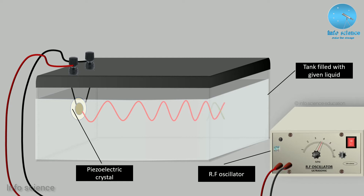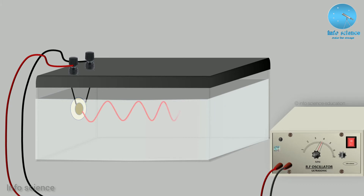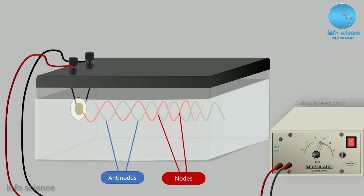In the animation, the first wave — the transmitted wave — goes in and reflects. We will form a standing wave. The red color represents the wave produced by the piece of crystal, the green color represents the reflected wave from the glass plate. The two waves combine to form a standing wave, and we can see the nodes formed.